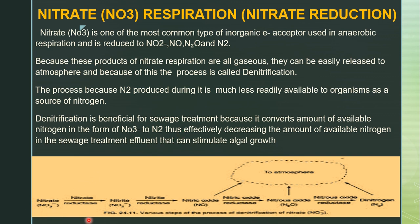The steps of denitrification proceed as follows: nitrate is converted to nitrite (NO₂⁻) by nitrate reductase; nitrite is converted to nitric oxide (NO) by nitrite reductase; nitric oxide is converted to nitrous oxide (N₂O) by nitric oxide reductase; and nitrous oxide is converted to dinitrogen (N₂) — a gaseous form released into the atmosphere. The biochemical mechanism of nitrate respiration has been well studied in Escherichia coli, Paracoccus denitrificans, and Pseudomonas stutzeri.